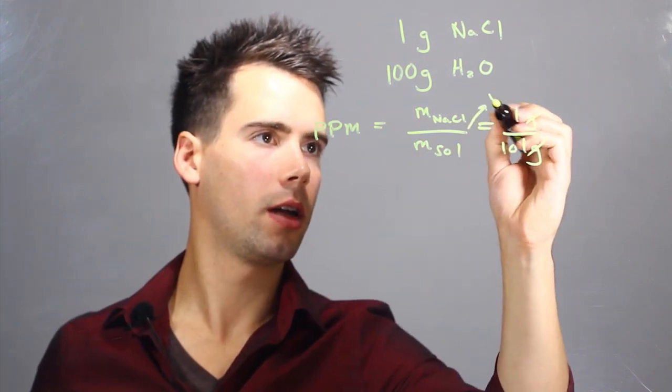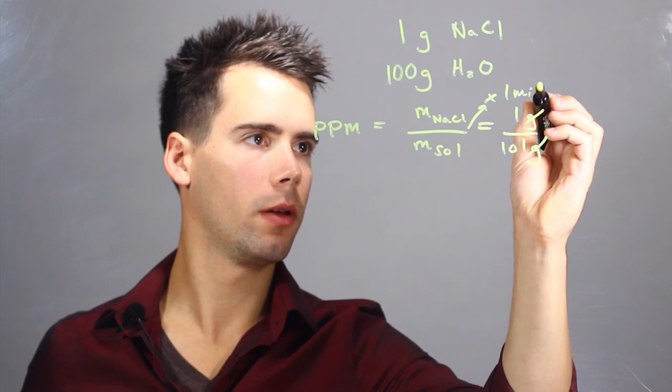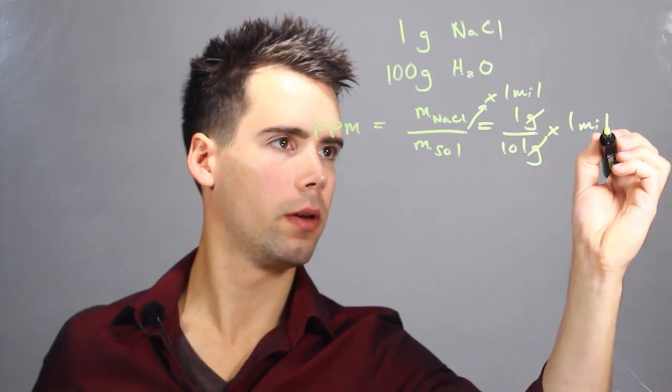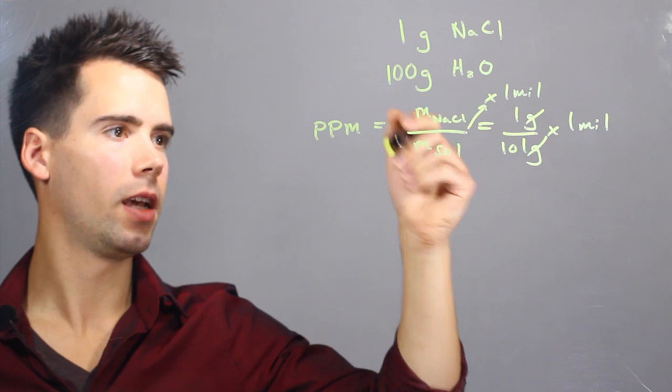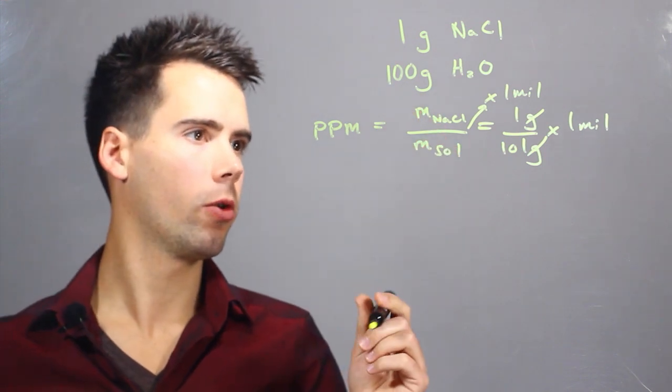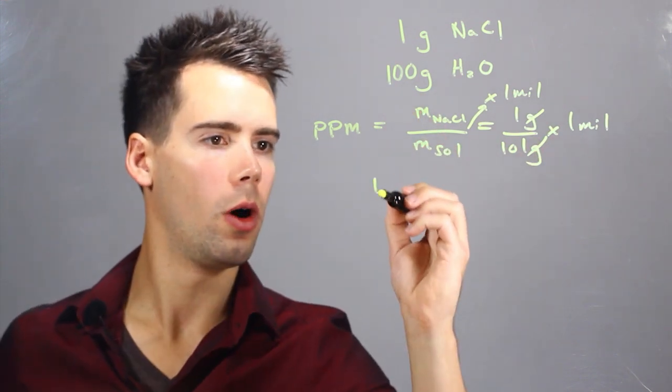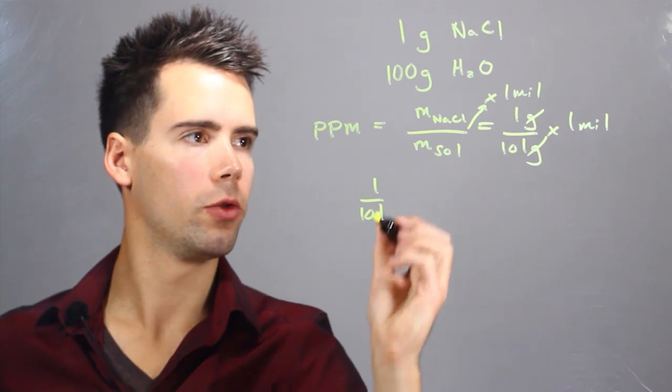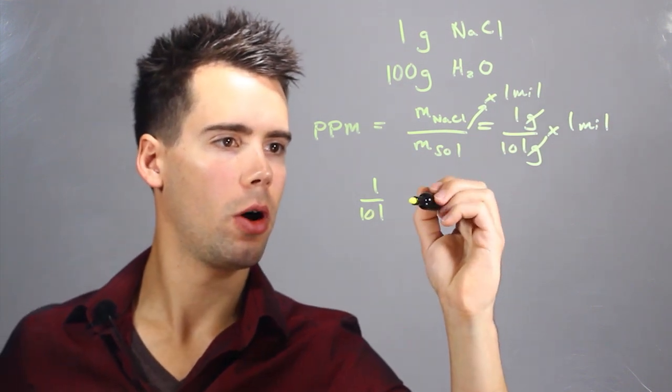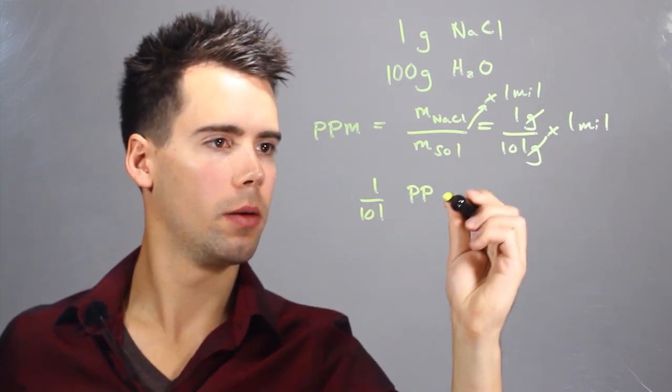So times one million, times one million, and we find in this example that sodium chloride has one over 101 parts per million.